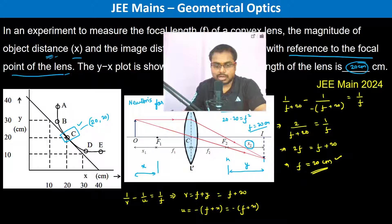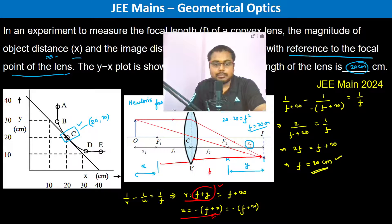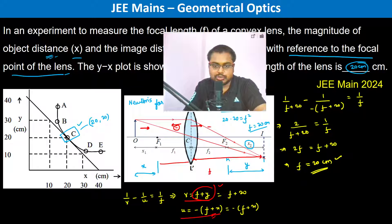To clarify: V is f plus y, which is the image distance from the optical center, and u is f plus x, the object distance. Since the incident light travels in a specific direction, u is taken as negative (opposite sign convention), while V is positive.